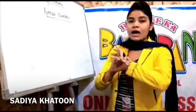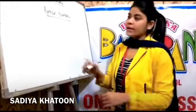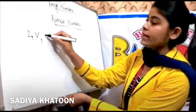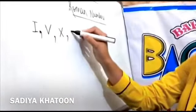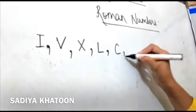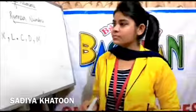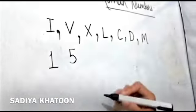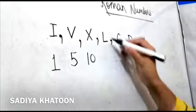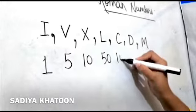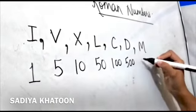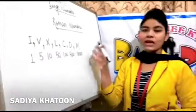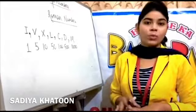The 7 Roman numeral alphabets are: I, V, X, L, C, D, M. Their values are: I = 1, V = 5, X = 10, L = 50, C = 100, D = 500, and M = 1000. Using these seven English alphabets, we can write any Roman number, but there are certain rules you need to remember.